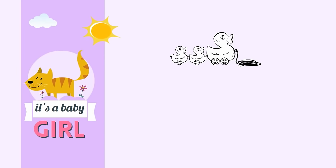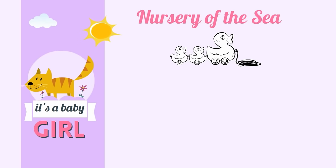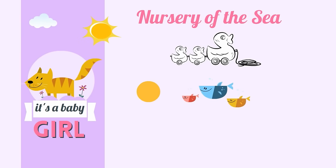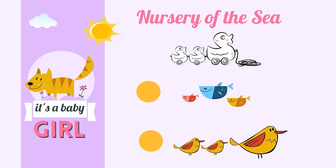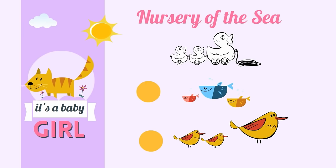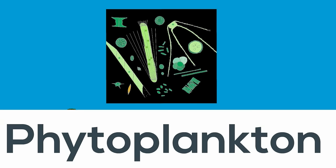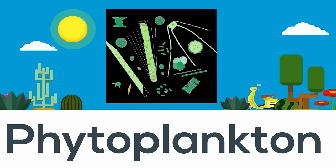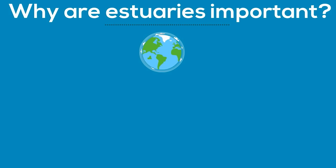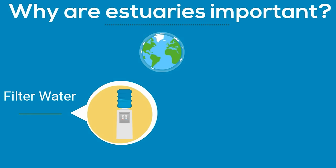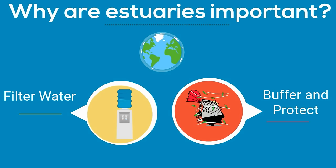Estuaries have been called the nurseries of the sea because they provide a safe environment for fish, birds, and other wildlife to raise their young. Estuaries also have producers called phytoplankton which help the food chain and provide food for many wildlife. They also filter sediment and pollutants from the water before it flows into the ocean, and they buffer the ocean and the land, helping decrease the effects of flooding and storm surges.